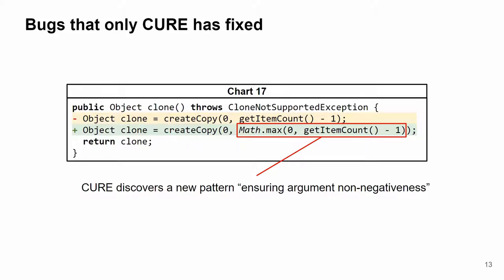In our 2.7 million patch training data, there are only two similar fixes. However, adding math.max to ensure non-negativeness is common in developer-written code, which is captured by our programming language model, and that's why CURE can fix it.